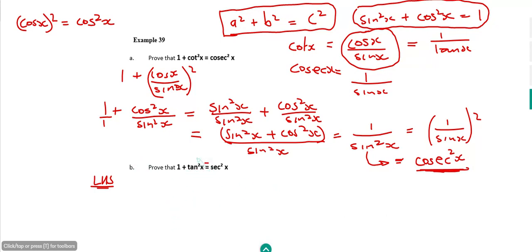So standard approach for this really is to break down everything in terms of just sine and cos. So I'm going to take the tan squared and I'm going to say, well, the tan squared is actually sin²x over cos²x.